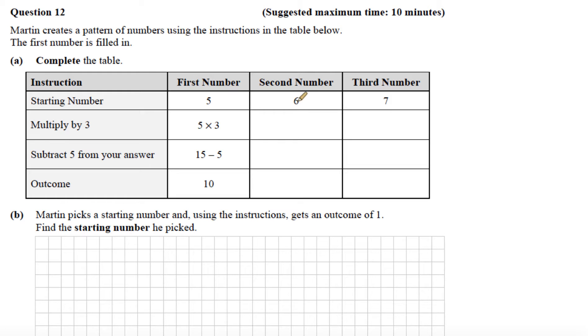If we're filling in the table, we're just going to follow the instructions. So if I start with the number 6 and multiply that by 3, 6 by 3, that gives me 18. And then I'm going to have to subtract 5 from 18, which leaves me with 13.